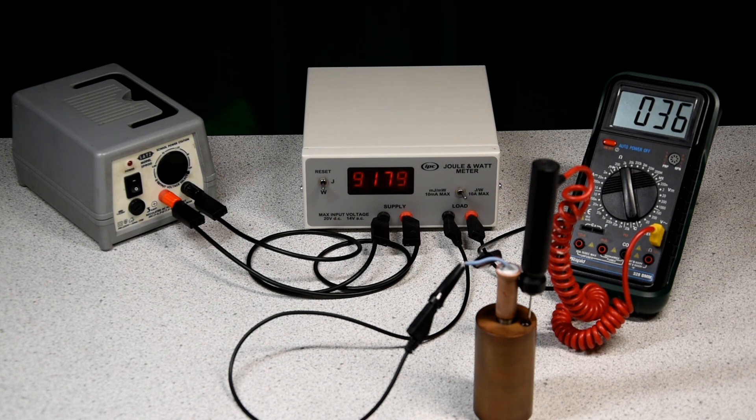Once we get to 9999 joules, we need to record the temperature and again calculate the temperature change. A remarkably similar value for the specific heat capacity of copper is obtained. Now, let's look at specific latent heat.